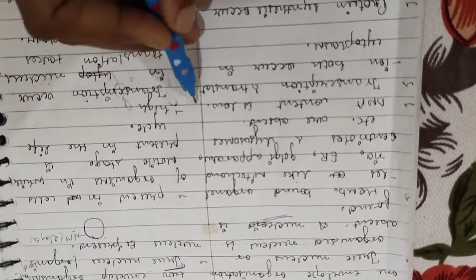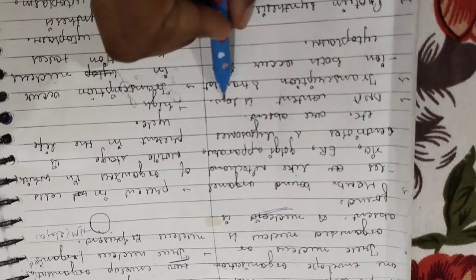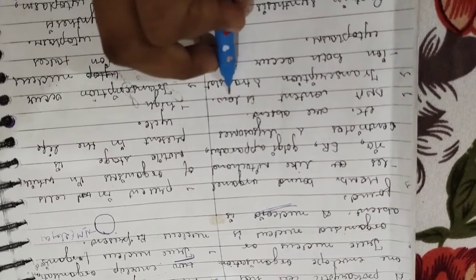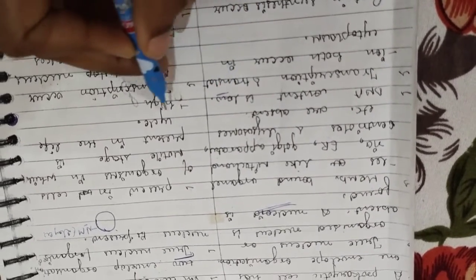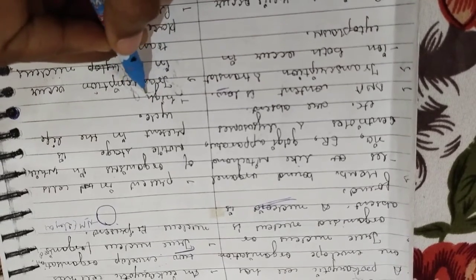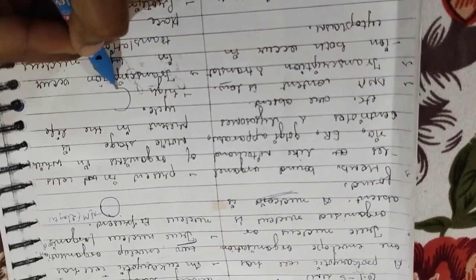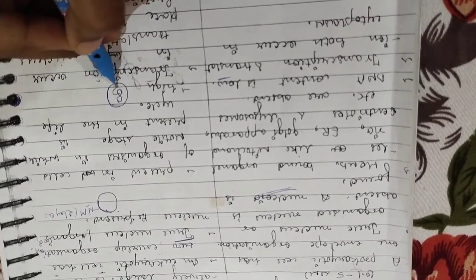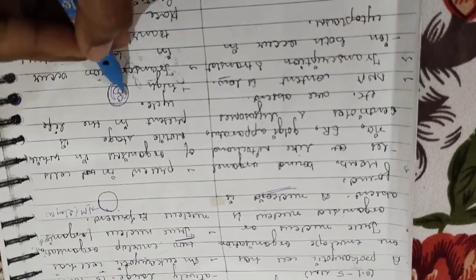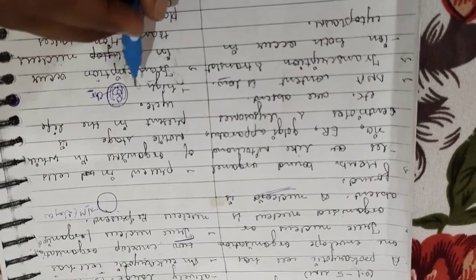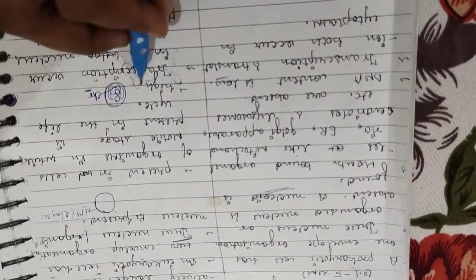Next point: if you talk about prokaryotic cells, the DNA content is low. In eukaryotic cells, DNA content is high because the DNA is present in the nucleus in a condensed form and chromosomes will be present, so here you will get a high DNA content.